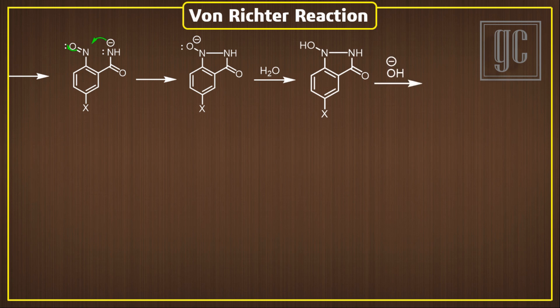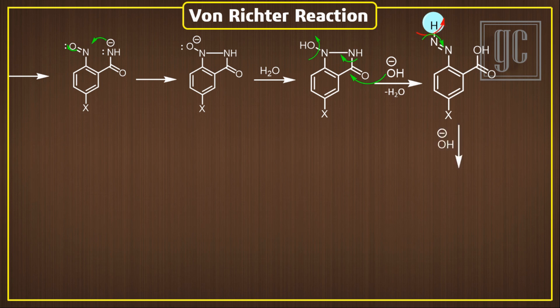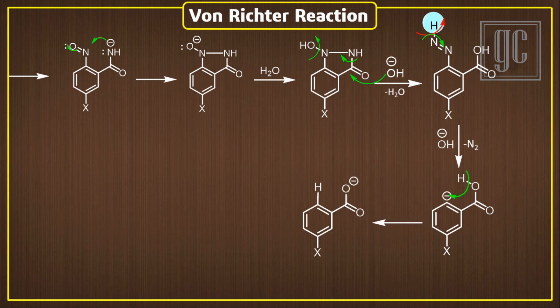Now hydroxyl ion attacks on the carbonyl of the amide bond; due to this the amide bond breaks, and a carboxylic group and diazene group form. Now one hydrogen atom is removed from the diazene group, and in the rearrangement nitrogen gas is released and an anion is formed on benzene. That anion is neutralized by proton transfer from the carboxylic group, and the final product, metahalobenzoic acid, is formed.